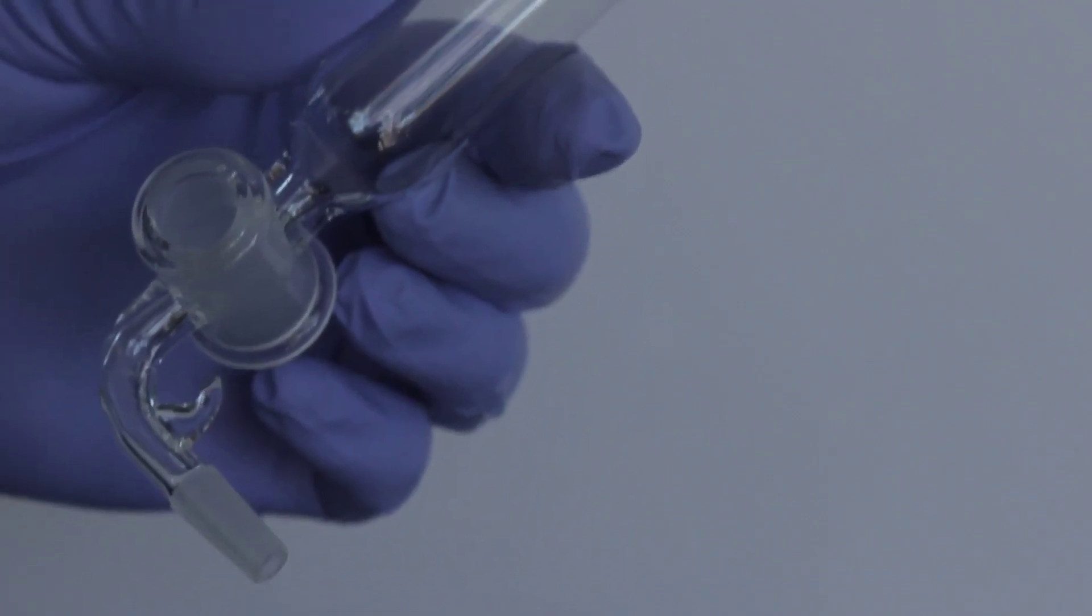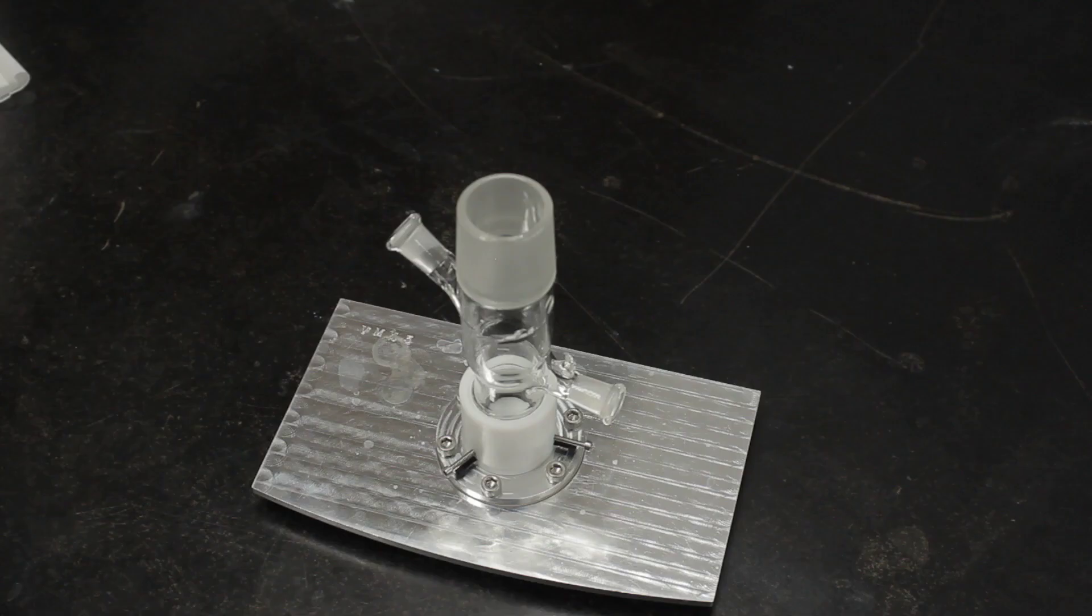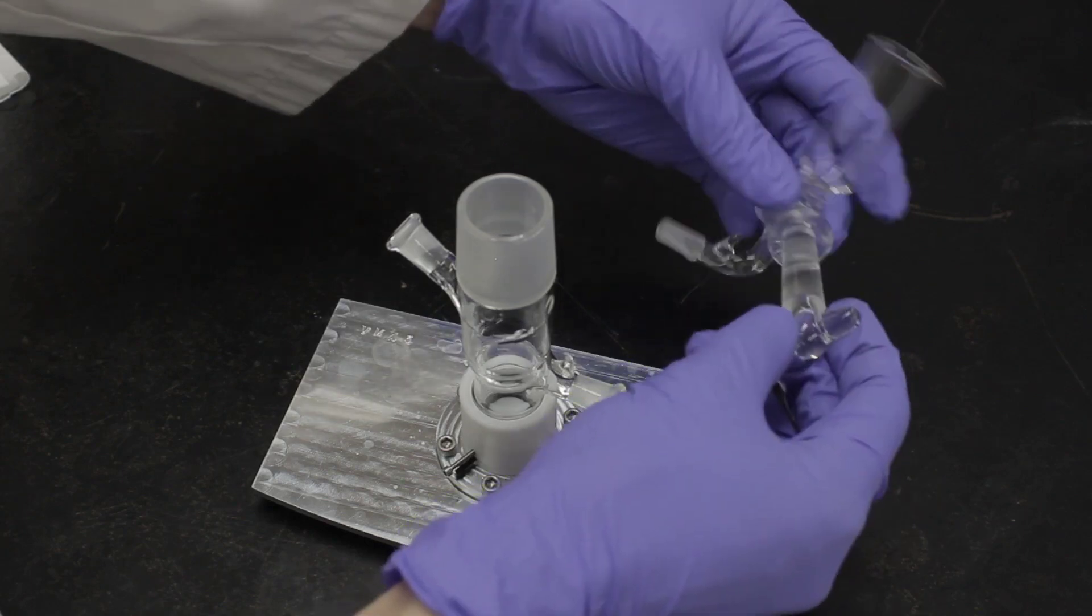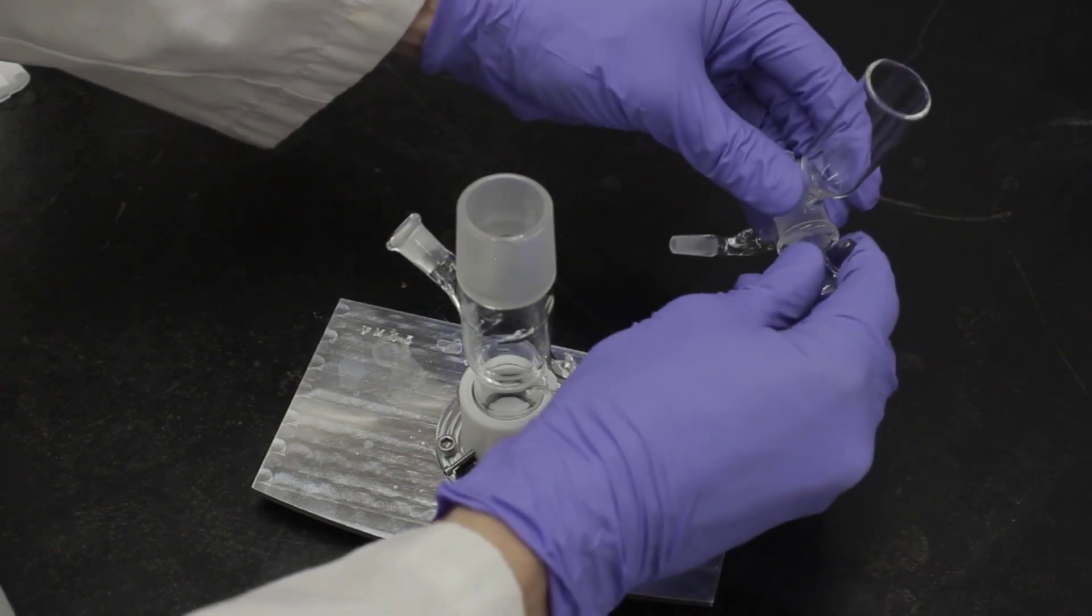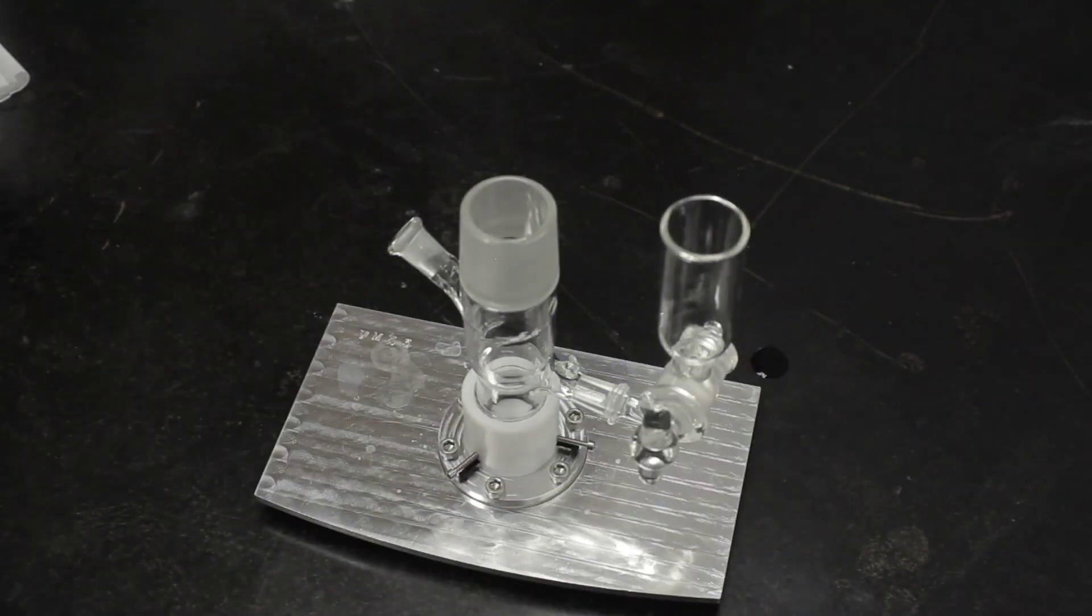When attaching the ground glass joints, wet the surfaces with millipore water. This helps them to seal and also prevents the joints from seizing. First, insert the stopcock into the reference arm. Make sure that the stopcock is open. Attach the reference arm to the main cell body and secure it with the spring.